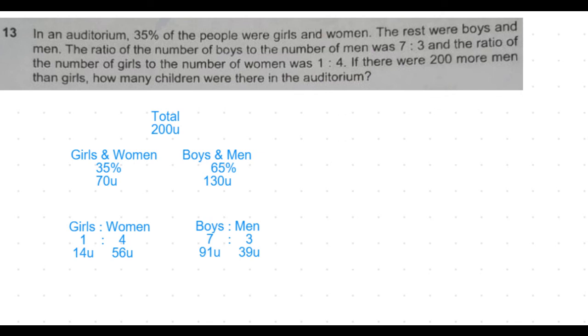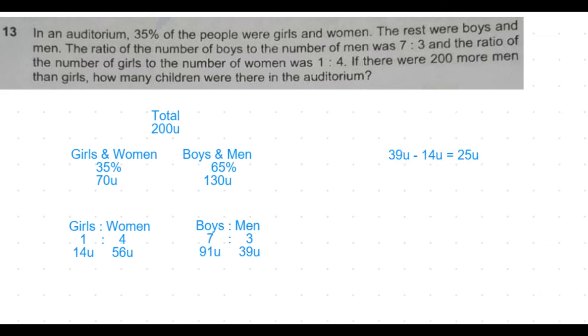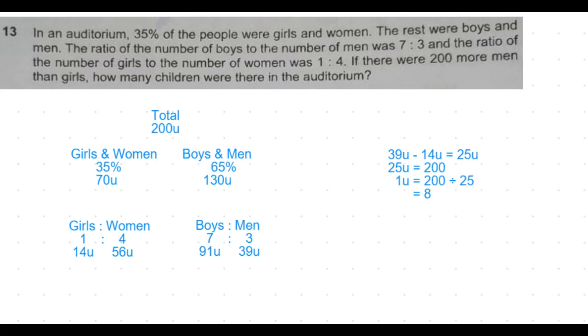They are given that there are 200 more men than girls. Men are 39 units and girls are 14 units, so the difference is 25 units, which is equal to 200. So we get the value of one unit to be equal to 8.